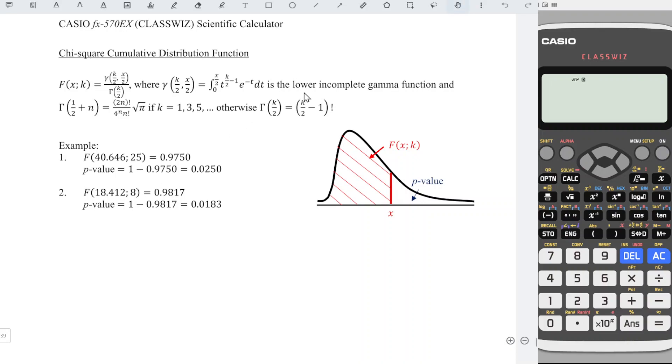First, use the lower incomplete gamma function and try for odd number. Follow the function exactly. This function uses t as a variable. If we press integrate, as we can see the variable here is x. Follow exactly, so we use x to the power of k over 2 minus 1. k here is the degree of freedom. For this case is 25.